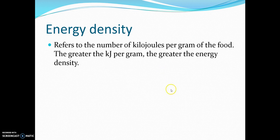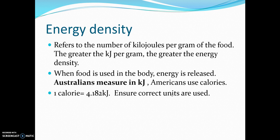Energy density refers to the number of kilojoules per gram in food. The greater the kilojoules per gram, the greater the energy density. When food is used by the body, the energy is released — that's why we say food is fuel. We measure food in kilojoules here in Australia, though calories is the term used in America. One calorie is equivalent to approximately 4.2 kilojoules, so you can convert if you prefer.